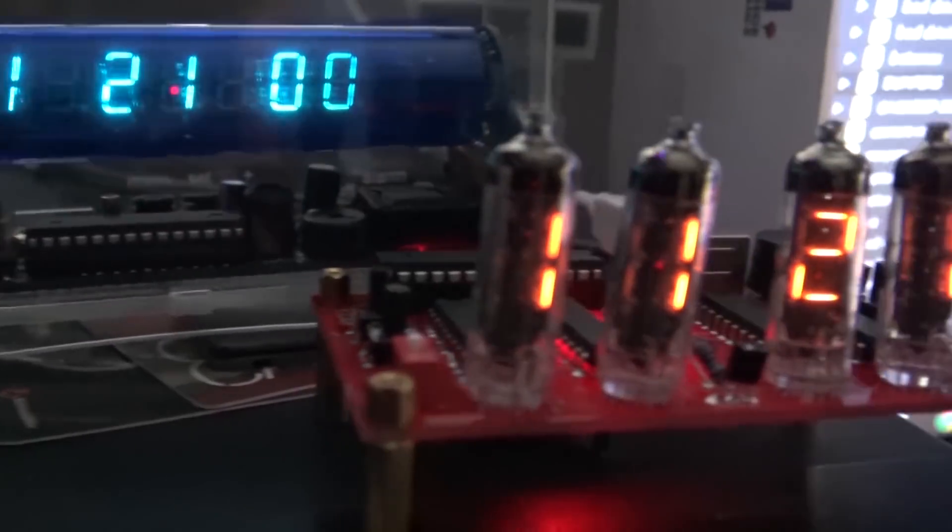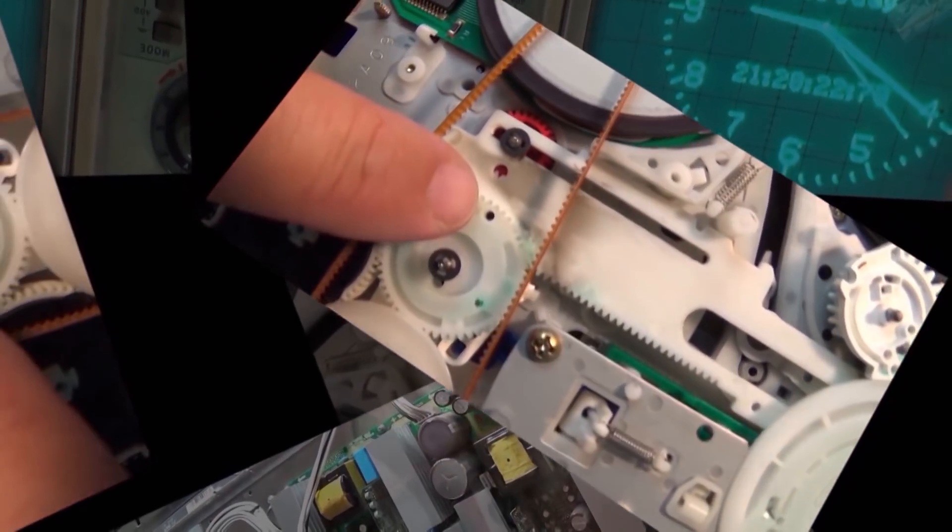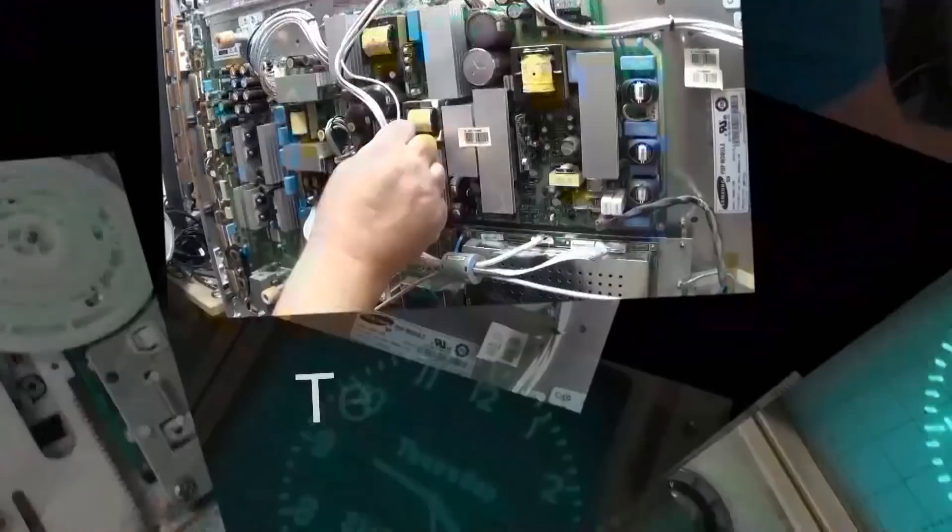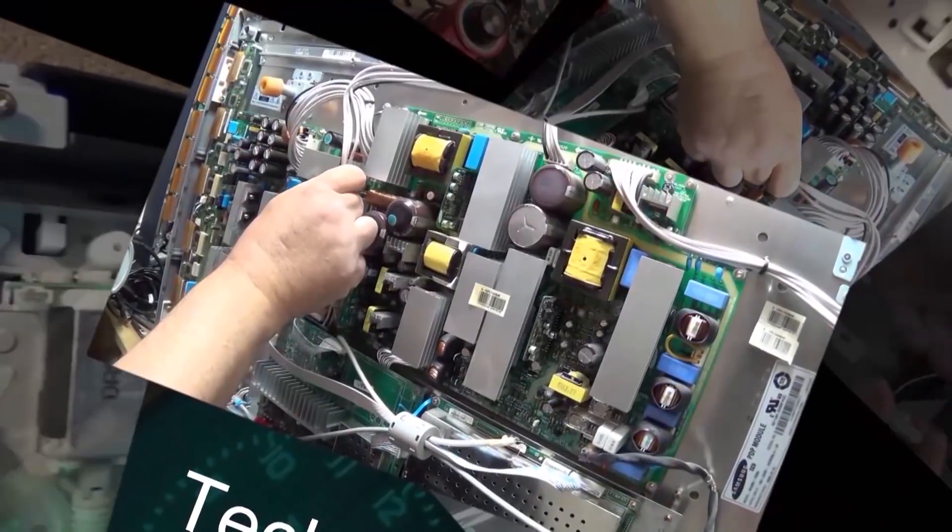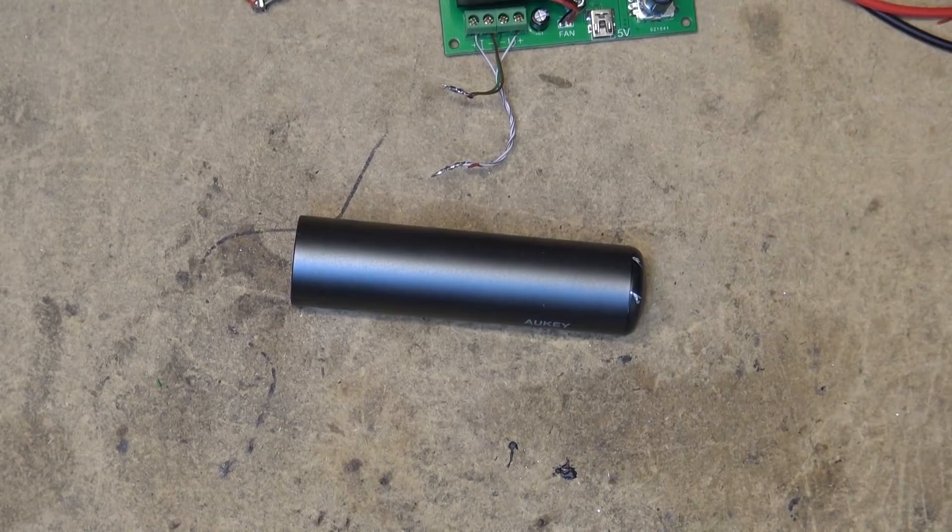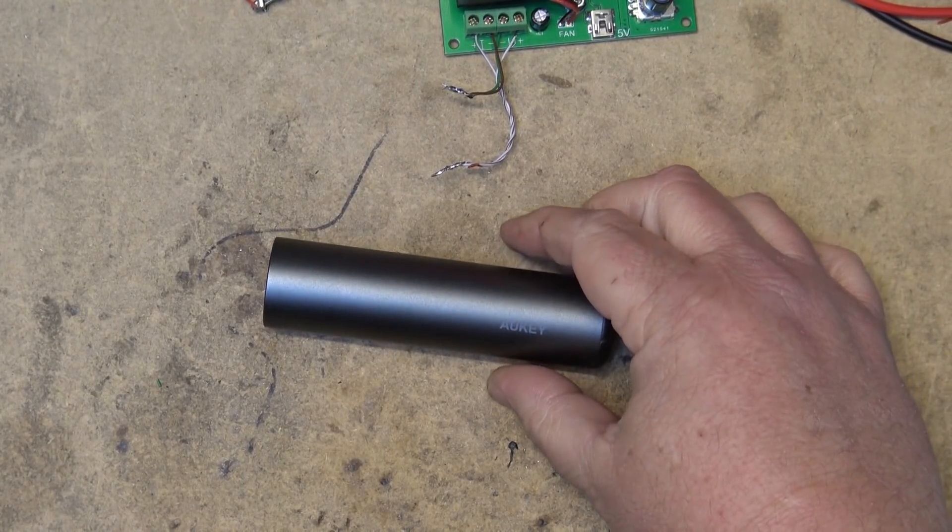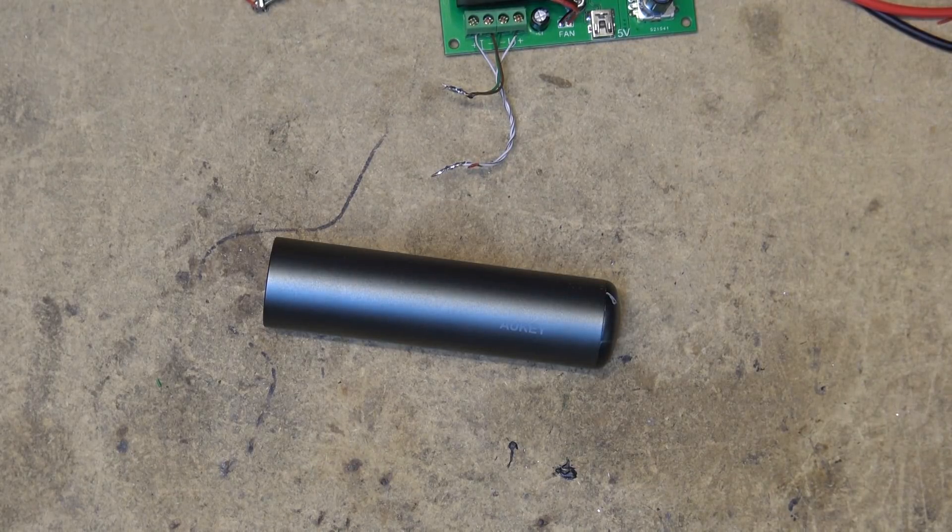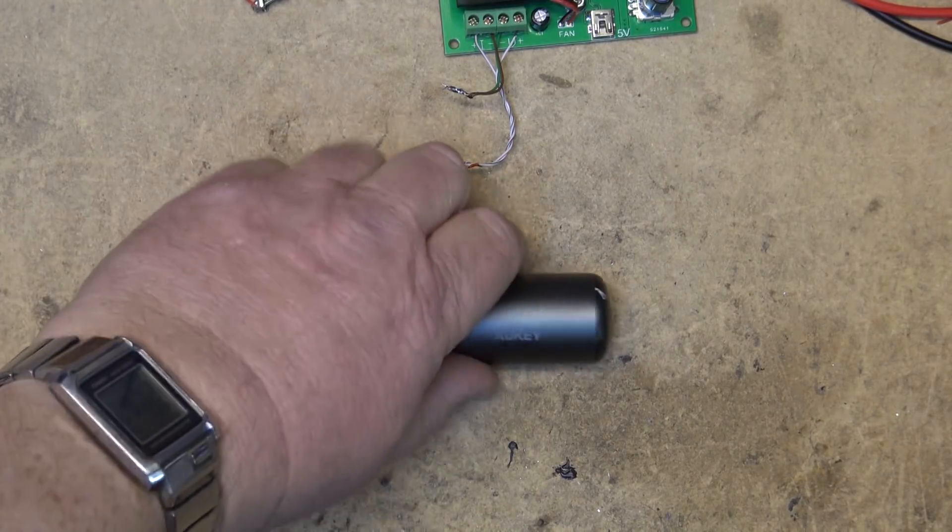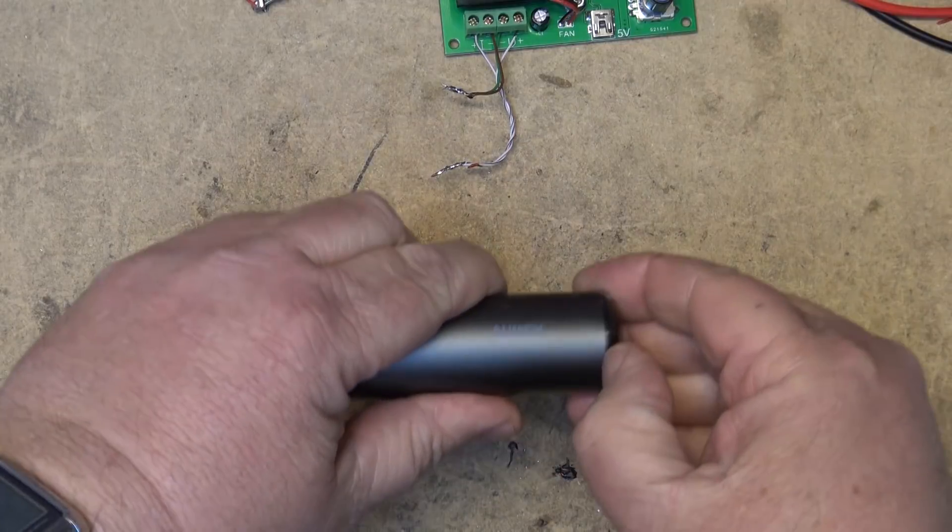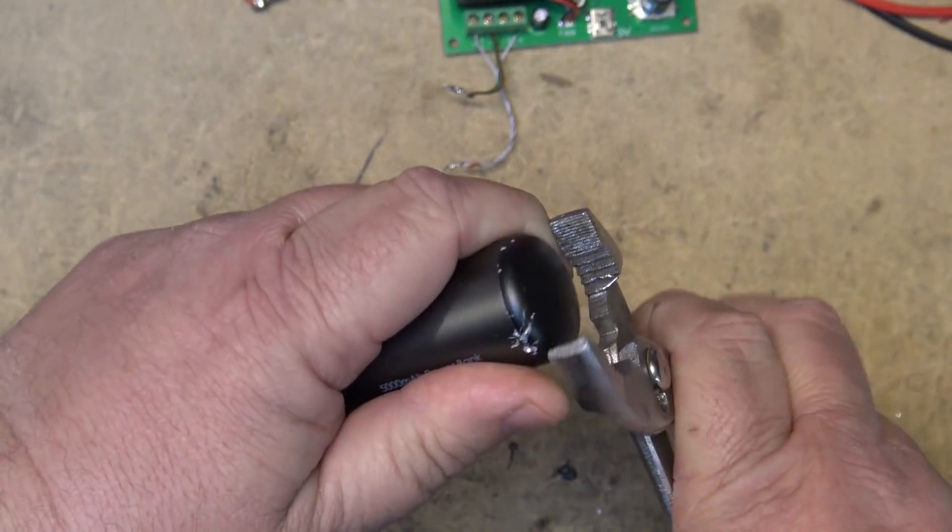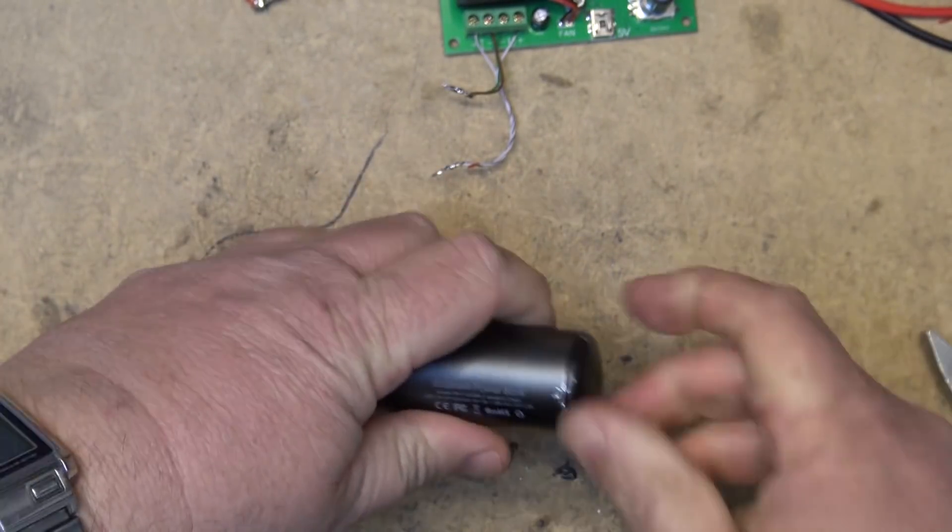In the previous video we looked at the Aukey 5000 milliamp power bank and gave it a full test under full resistive load. I couldn't get the thing apart yesterday, but I spent some time on it today and found out that this thing actually does come apart. I didn't think that maybe it was just simply screwed in, but after working on this thing for a bit I found that it is just that, it's screwed in.